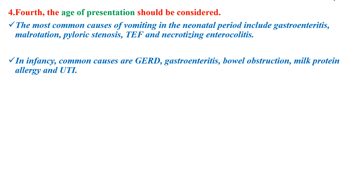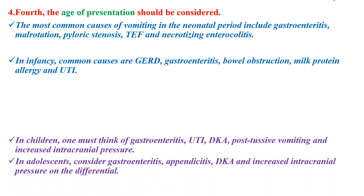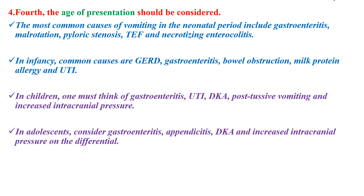In infancy, common causes are gastroesophageal reflux disease, gastroenteritis, bowel obstruction, milk protein allergy, or other conditions. In children, one must think of gastroenteritis, DKA, UTI, and vomiting may also be due to ketosis or increased intracranial pressure. In adolescents, gastroenteritis, appendicitis, DKA, and increased intracranial pressure are also in the differential.